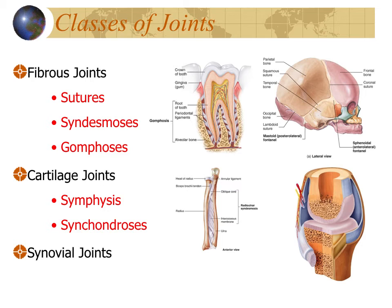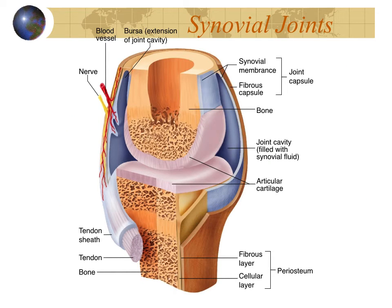Cartilaginous joints include the pubic symphysis and the joints between the ribs and sternum. These synchondroses have little to no movement but allow for growth or shape changes. Synovial joints are more complex, containing both fibrous tissues and cartilage and allowing a large range of movement. All synovial joints contain articular cartilage covering the mobile ends of the bone, held together by a fibrous capsule that surrounds the joint cavity, lined by a synovial membrane that secretes fluid.